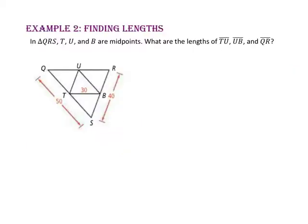In example 2, we will find lengths. In triangle QRS, points T, U, and B are midpoints. What are the lengths of segment TU, segment UB, and segment QR? Let's start by marking our congruent segments. Since T is the midpoint of segment QS, QT is congruent to segment ST. Since point U is the midpoint of segment QR, segment QU is congruent to segment RU. And since point B is the midpoint of segment SR, segment SB is congruent to segment BR.